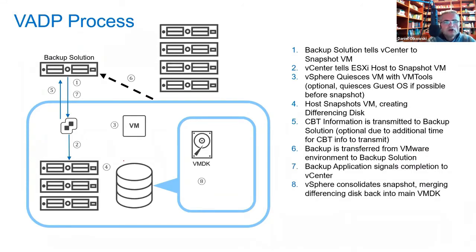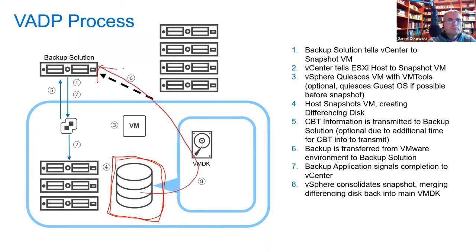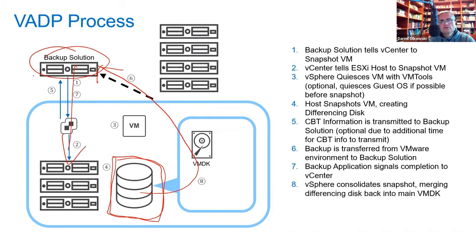How does the current backup process work? We have a datastore, a disk system, and virtual machines on hosts. The backup solution makes a snapshot to have a consistent image, reads the data, sends it to a proxy, and the proxy sends it to backup media. It looks complicated, and in reality it's even more complicated. A single proxy can backup up to 25 virtual machines at the same time; if we have 200 virtual machines, we need a lot of proxies.